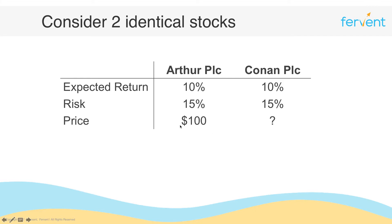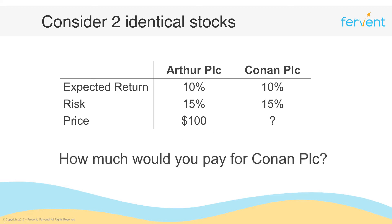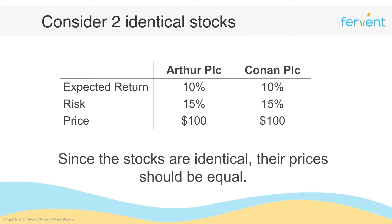Assume the price of Arthur plc is known to be a hundred dollars. How much would you pay for Conan plc? Given that these two stocks are identical — same expected returns and same risk — they should trade at identical prices. You should be willing to pay no more than a hundred dollars for Conan plc. This is because of the law of one price, which states that any two assets identical in all aspects — same payoffs and same risk — must have exactly the same price.